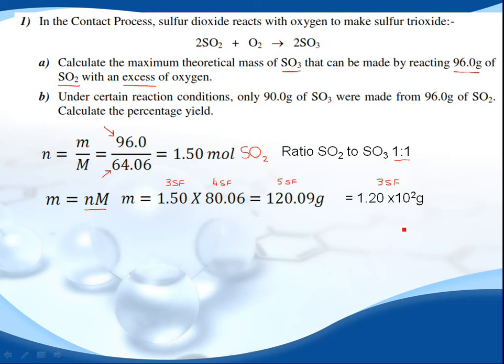Let's do part B. Under certain conditions, only 90 grams of SO3 were made from the 96 grams of SO2. Calculate the percentage yield.